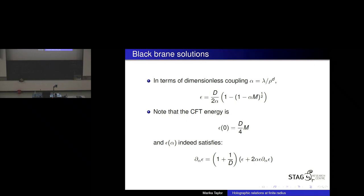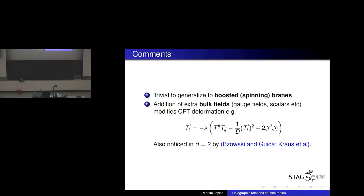For simplicity I've shown the case of static branes, but you can obviously generalize to boosted spinning branes. If you add other fields into the bulk — gauge fields, scalars — this will modify the CFT deformation, and you also have to take into account that the values of the fields on the cutoff surface act as background couplings. This deformation alone is not sufficient to describe everything; this was already known in two dimensions from Monica Guica, Adam Bzowski, and Per Kraus's collaborators. But what you can do with this methodology is systematically work out what's going on at finite radius by analyzing the Gauss-Codazzi equations of whatever your bulk action is.